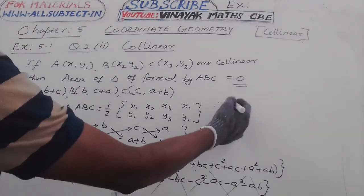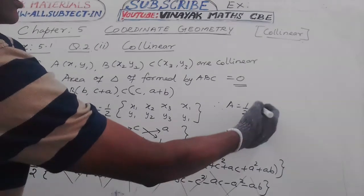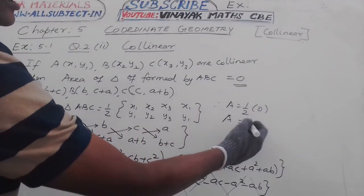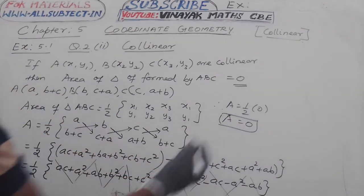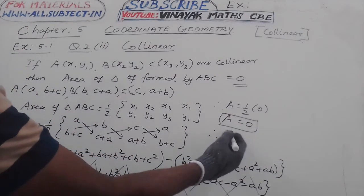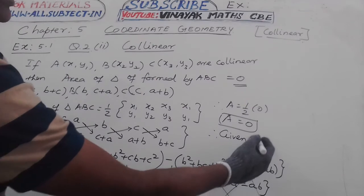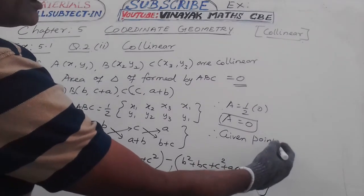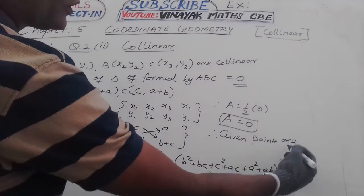Area of triangle equals half of 0. I will write in total area equal to 0. Area of triangle is equal to 0. Therefore, given points are collinear.